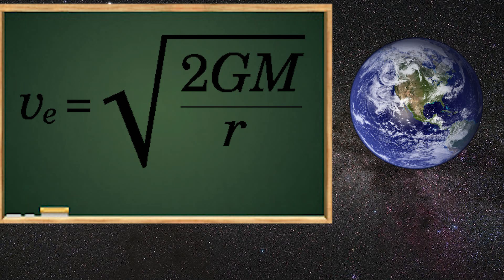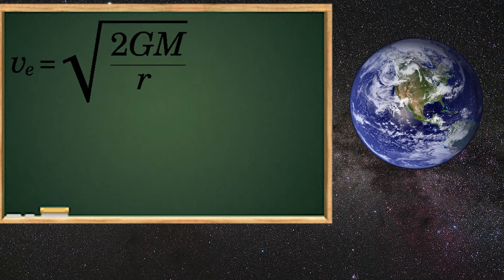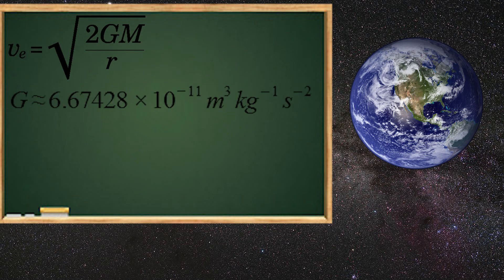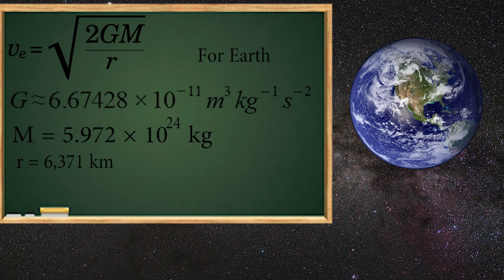Here is the equation to find the escape velocity of any object: G is the gravitational constant, M is the mass of the object we are calculating the escape velocity for, and R is the distance of our spacecraft from the object's center of mass. Earth's escape velocity turns out to be 11.2 kilometers per second from its surface.